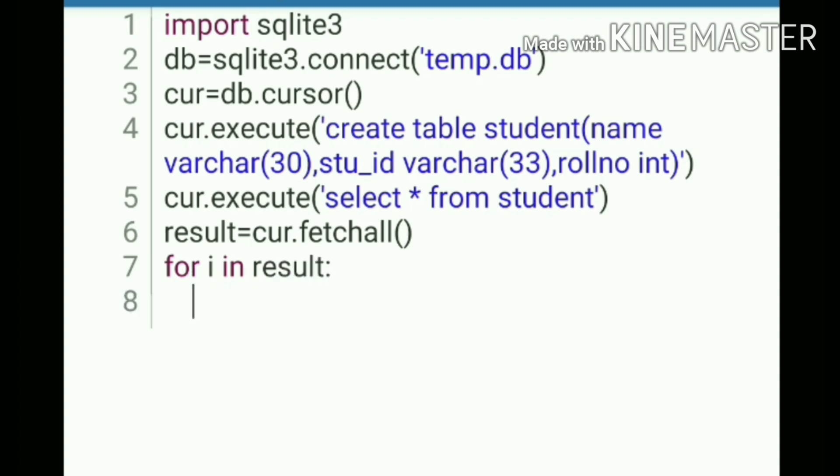This is a simple example. If you want something more on it, please comment and I will make another video showing how to use different commands. To print the result, we have to run a for loop. And then after that, we have to commit it with db.commit.